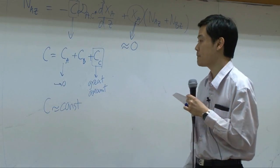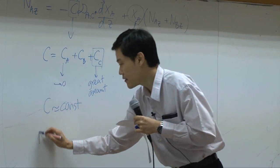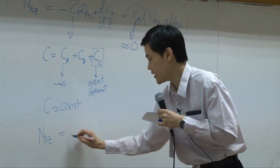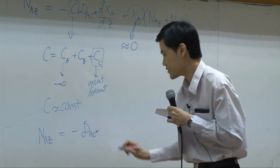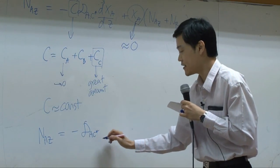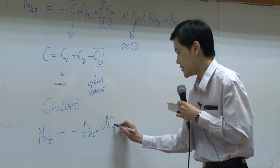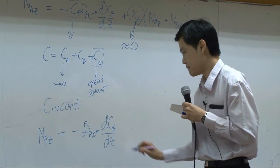All right, if you do that, you get flux of NAZ equal to minus diffusivity CA star AC star, dCA by dz.